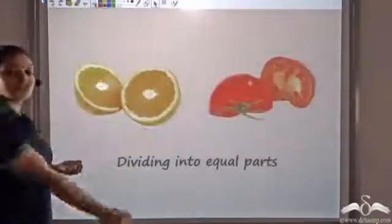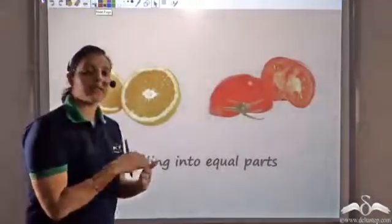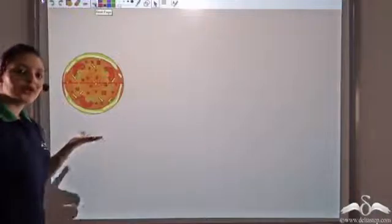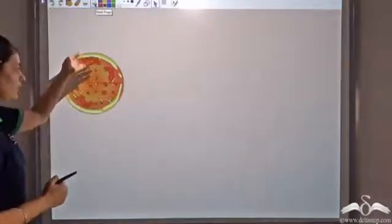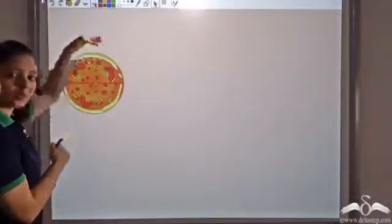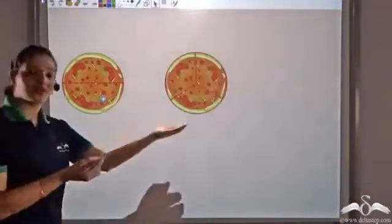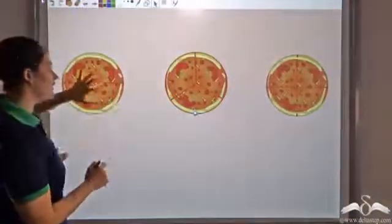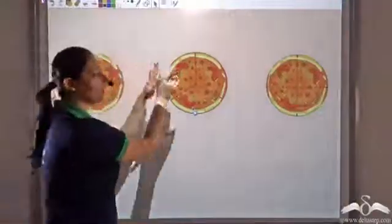Another way to interpret division would be that I want to divide something into equal parts. Let's say you want to divide this pizza into two parts — divide it into two equal halves. I can also divide it into three parts or four parts. So it depends on me; I can divide one thing into any number of parts, and I can divide any number of things by any number of parts.